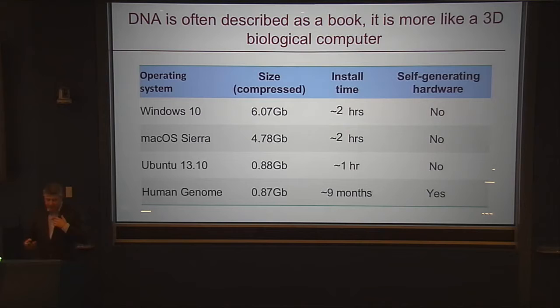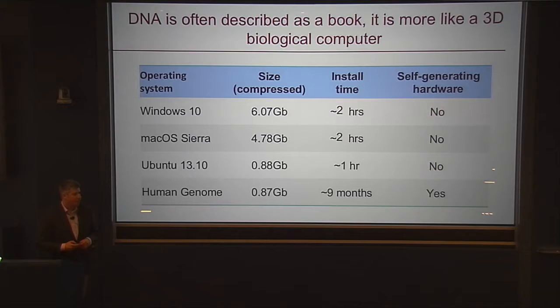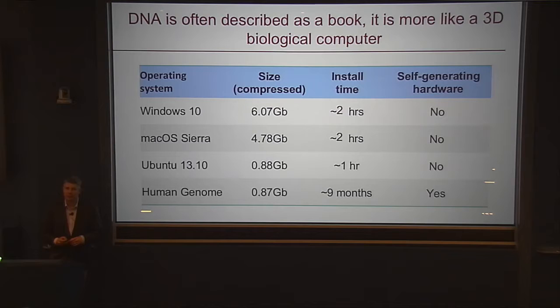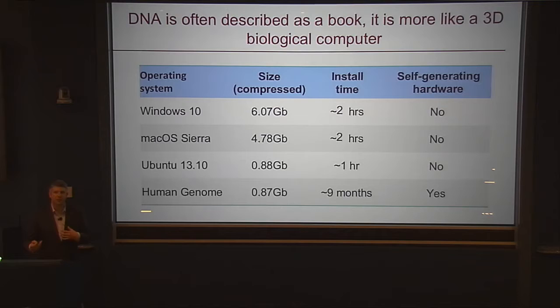We're going to start off with DNA, which is of course the root of all genetics. When I was at school, I was taught that genetics was a book — that DNA was a book which contained information which you read. As I've come to understand genetics better, I have realized that it is much better to think of DNA as a three-dimensional biological computer. Not only does it contain the information necessary to encode all of us, including the most complex organ in the entire known universe — the brain — but it doesn't just encode the information; it is the computer. It does the interactions and the determination of when things are going to be expressed.